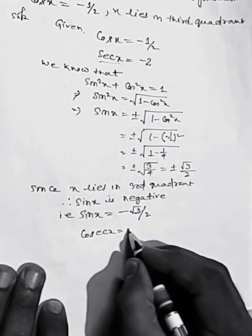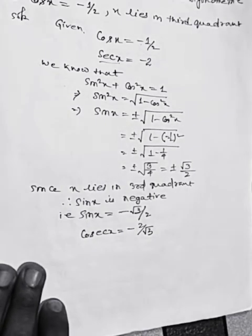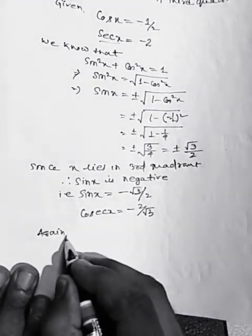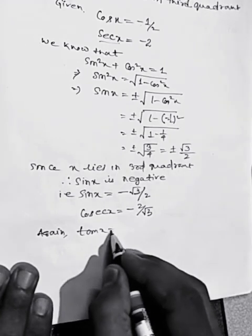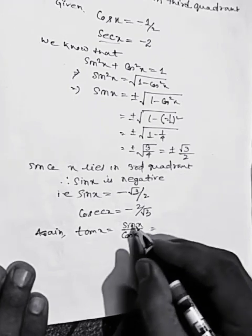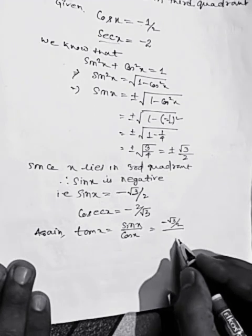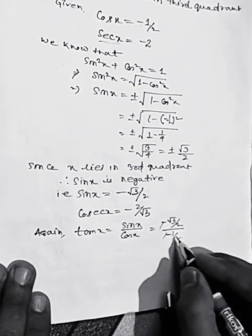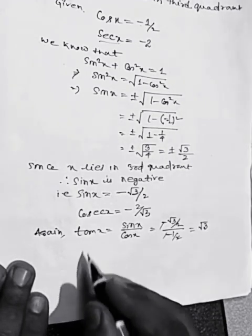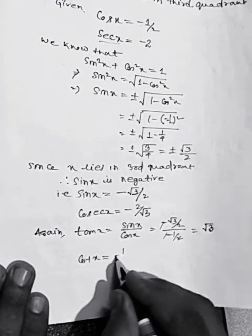Next, cosec x equals 1 by sin x equals minus 2 by root 3. For tan x, tan x equals sin x by cos x equals minus root 3 by 2 divided by minus half. The negatives cancel and we get root 3. Similarly, cot x equals 1 by tan x equals 1 by root 3. So these are the other five trigonometric functions.